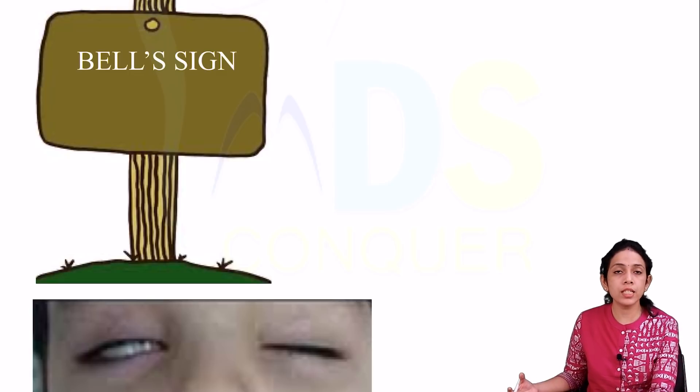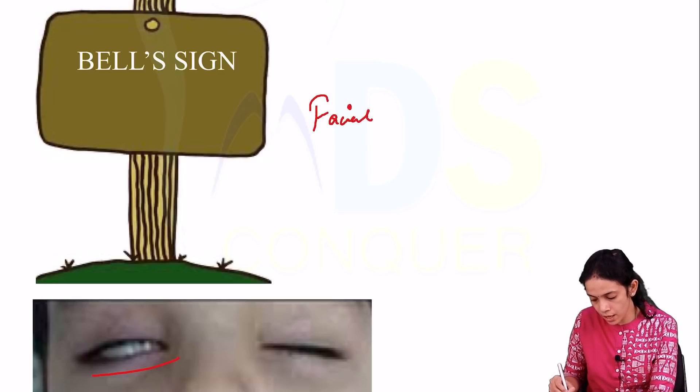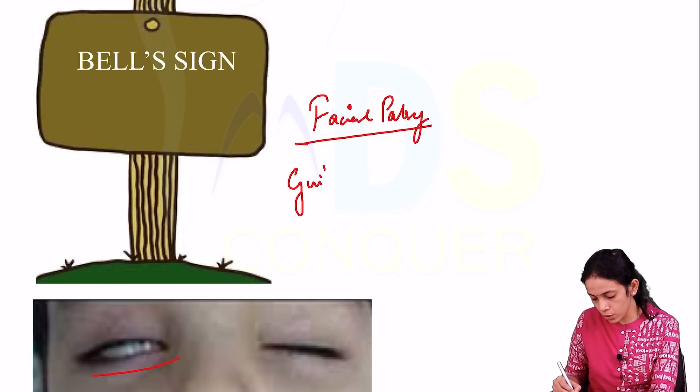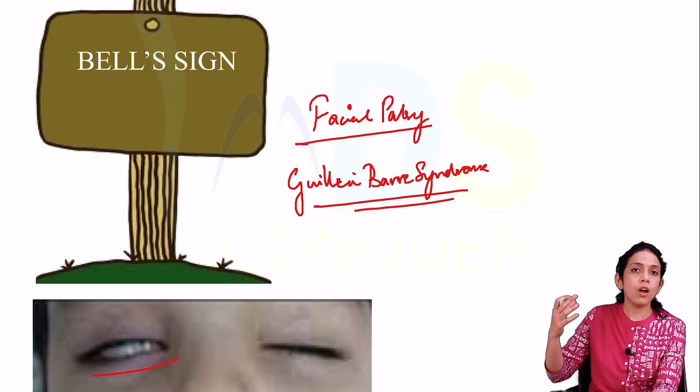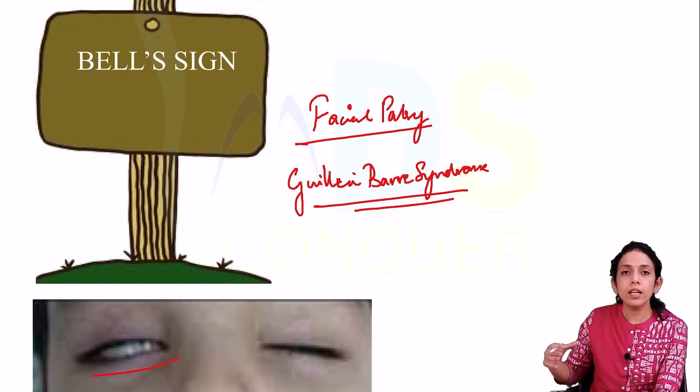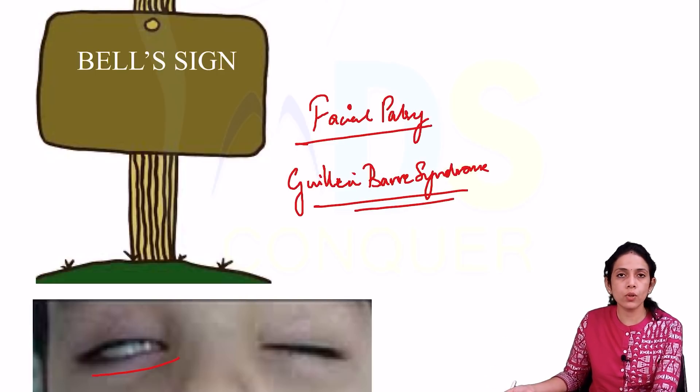Next is the Bell sign, also called Bell's phenomenon. When a patient attempts to close their eye, there is upward or outward movement of the eye, making it difficult to close completely. It is seen with facial palsy, and when it occurs bilaterally, it is seen with Guillain-Barré syndrome. The sign becomes more prominent when the orbicularis oculi muscle becomes weaker.